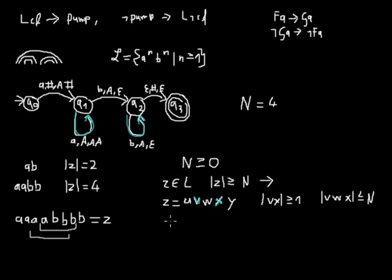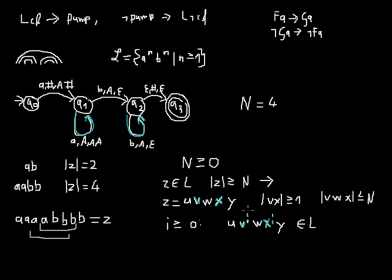And it also says that for any i greater or equal zero, if you have the separation, then U V^i W X^i Y is also in the language. If you have both pumpable parts, you can imagine these are two loops like we have in the automaton, and V in this example would be the number of a's. If you read one more a, you need to read one more b, so that the word will stay in the language. So you have to pump V and X for the same amount so that the word stays in the language.